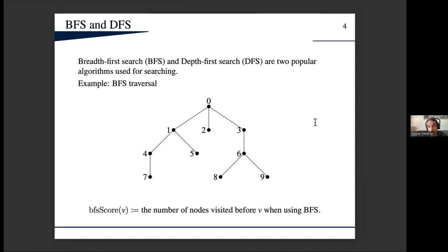These labels I call them BFS scores. Formally, the BFS score of a vertex is the number of nodes visited before that vertex when using BFS. But the reason I'm interested in this statistic is that basically it corresponds to the time complexity of BFS when the target node is this v. Alternatively for DFS we introduce DFS scores for our vertices.